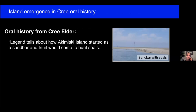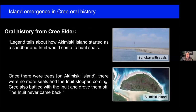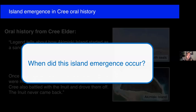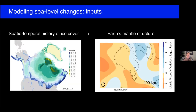Why are sea level modelers involved? It turns out that one prevalent story in the Cree oral history is one of Akamiskie Island's emergence from the sea. According to Cree oral history, the Inuit first used Akamiskie Island to hunt seals when the island was first emerging and it was more of a sandbar. However, the Inuit later abandoned it because the number of seals decreased due to the evolution of the island habitat, and/or the Cree forced them off. What's unknown is the timing of these events — specifically, when did this island emergence occur, and was it pre-European contact around 400 years ago?